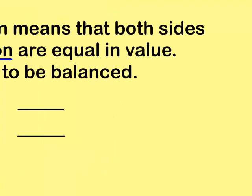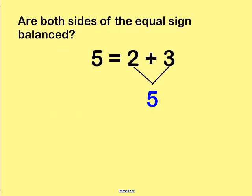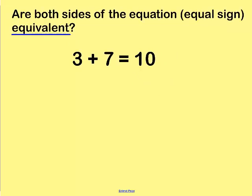The equal sign means that both sides of the equation are equal in value — they are said to be balanced. Are both sides of the equal sign balanced in this equation? 5 equals 2 plus 3. If we take a look at 2 plus 3, draw lines down from the 2 and the 3, and put what it equals down below — it equals 5. Now we have 5 is equal to 5, because 2 plus 3 equals 5. Are they balanced? Yes, they are. 5 is the same as 5. Equivalent means the same. 3 plus 7 is 10, and 10 is equal to 10 — they are equivalent.